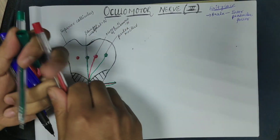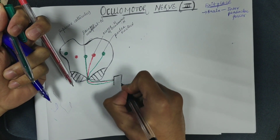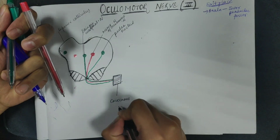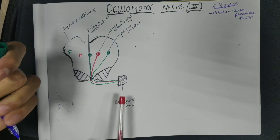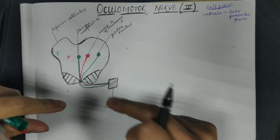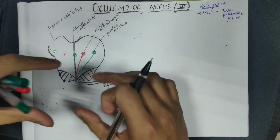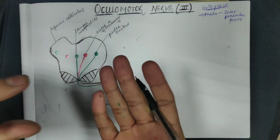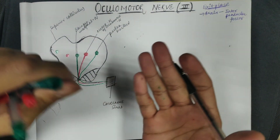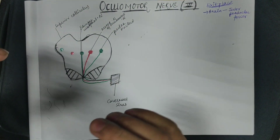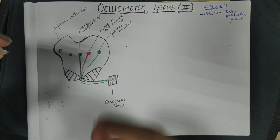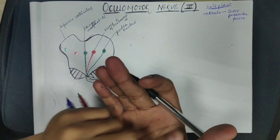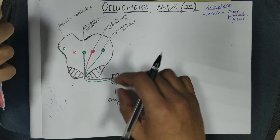Before entering the cavernous sinus, the nerve is present between two arteries: the superior cerebellar artery and the posterior cerebral artery. This has clinical significance — an aneurysm can occur due to any distension or bulging of these two arteries. Because of atherosclerosis, high blood pressure, or abnormal blood supply, these arteries can press on the nerve and cause paralysis of the eye muscles.